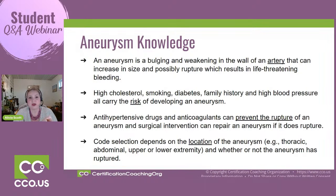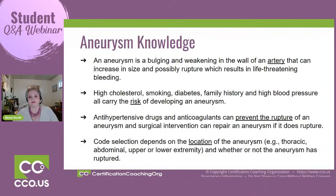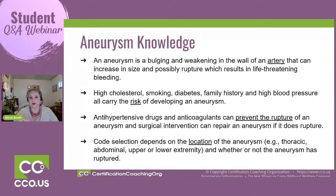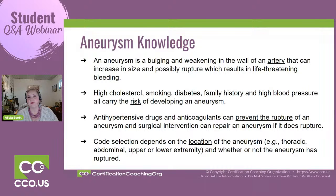Cholesterol narrows the vessels. Smoking is extremely harmful to vessels. Diabetes, family history — because a lot of it is congenital — and high blood pressure over an extended period of time all increase the risk factors of developing an aneurysm. Treatment includes anti-hypertensive medications to keep blood pressure under control, and anticoagulants to thin the blood, as well as interventional procedures like roto-rooting out the vessels or doing a repair of the aneurysm.